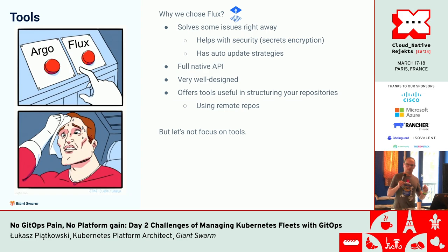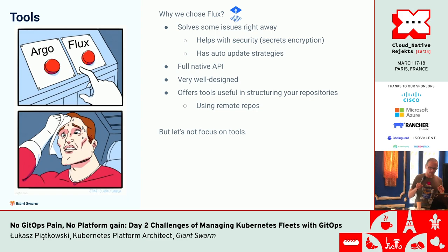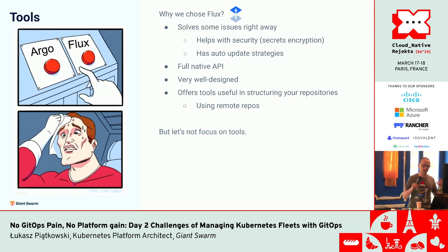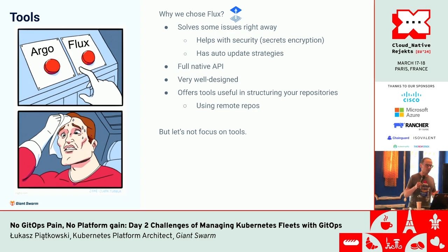I won't be talking much about tools here, because what I'm talking about is pretty generic and doesn't really depend on the tool. But as you know, while in the Kubernetes space there are two most common projects — Argo and Flux — we chose Flux. We really like Flux. It solves some of our issues right away. I really recommend the project. It has a full native API for managing GitOps.